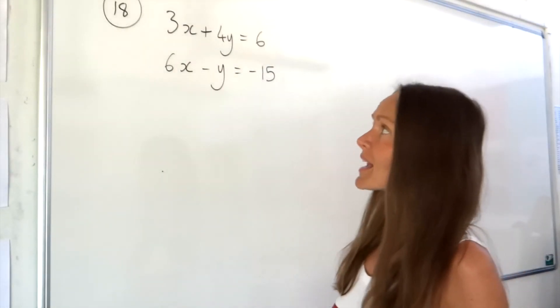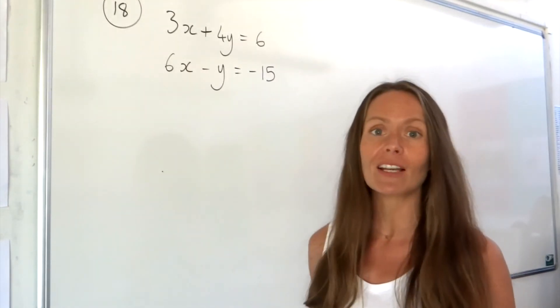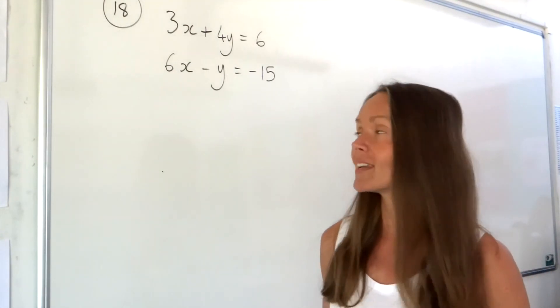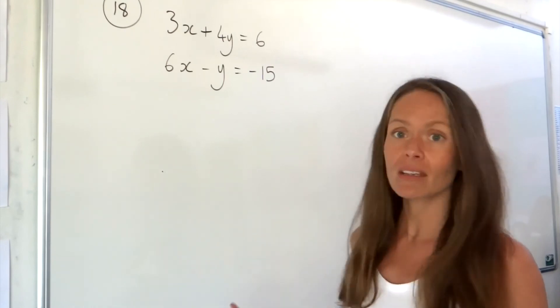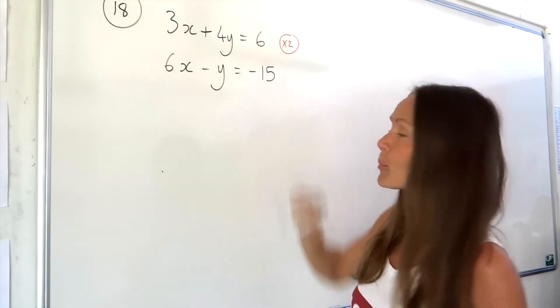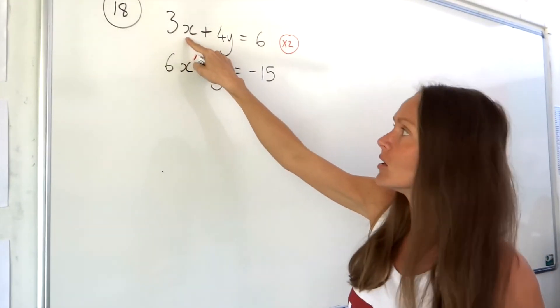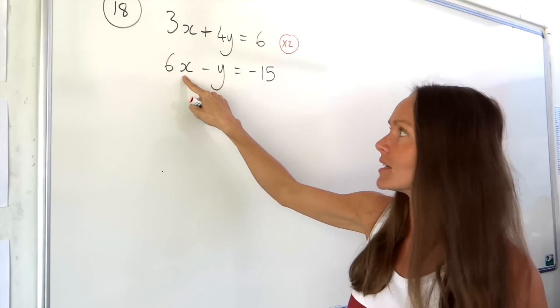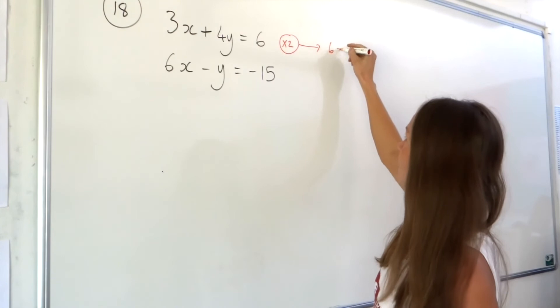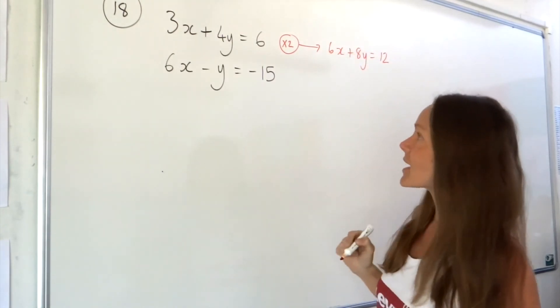In question number 18 we have to solve the simultaneous equations, so we have to work out the values of both x and y. There are several ways of solving simultaneous equations. In my answer I'm going to start by multiplying the top equation by two so that will give me a 6x here to match the 6x underneath. When I multiply all of this equation by two I get 6x plus 8y equals 12.